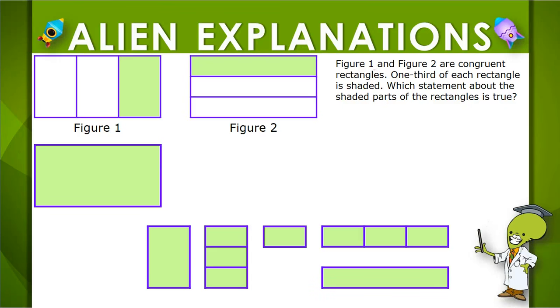We're given two congruent rectangles, and one-third of each rectangle is shaded. We're trying to find a comparison statement about the shaded areas.